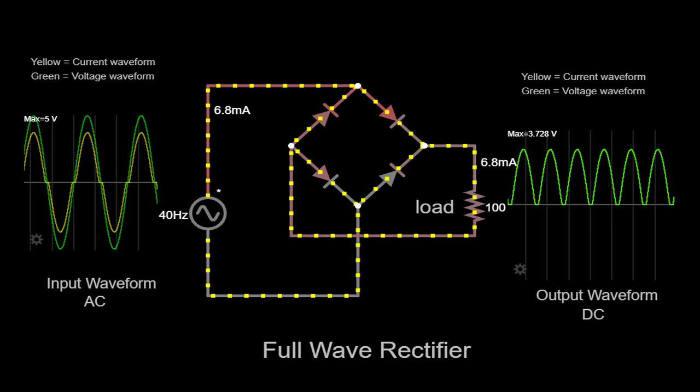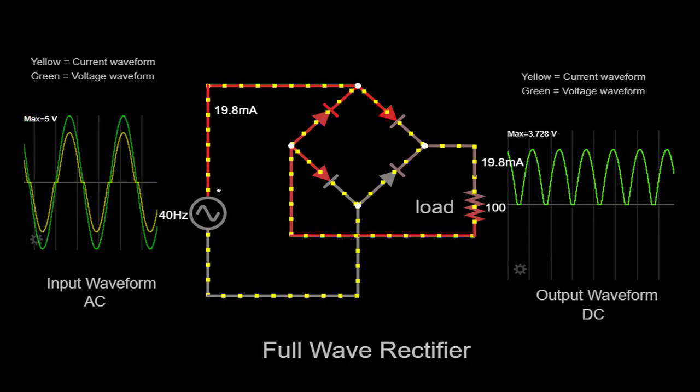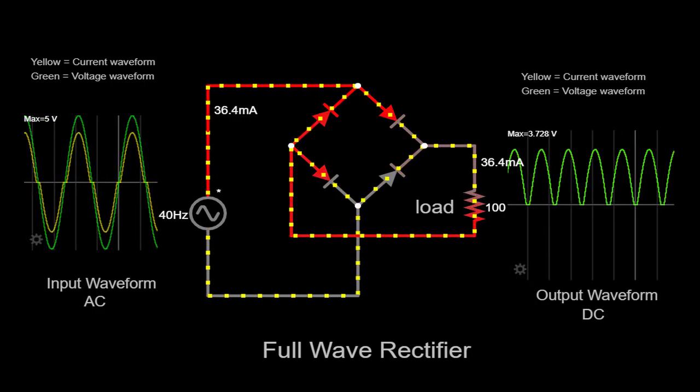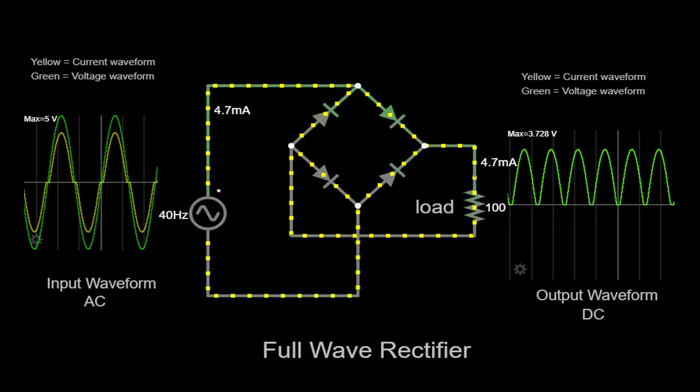Looking at the output waveform on the scope, we can see a pulsating DC signal. This waveform comprises positive half cycles that align with the positive half cycles of the input waveform.